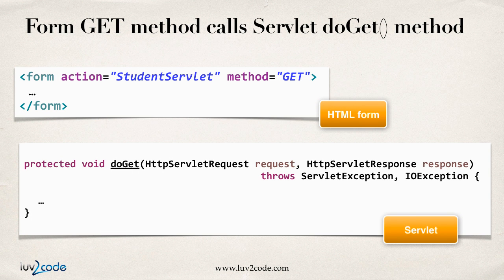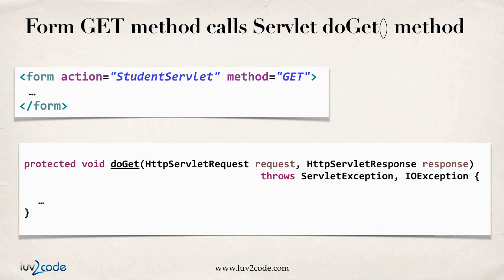The one thing that's unique to point out here is that since this form is going to send the data using method equals get, this actually calls the doGet method in your servlet. So method equals get will call the doGet method in your servlet. You have to make sure that you override the appropriate handler method — make sure you override the doGet method.